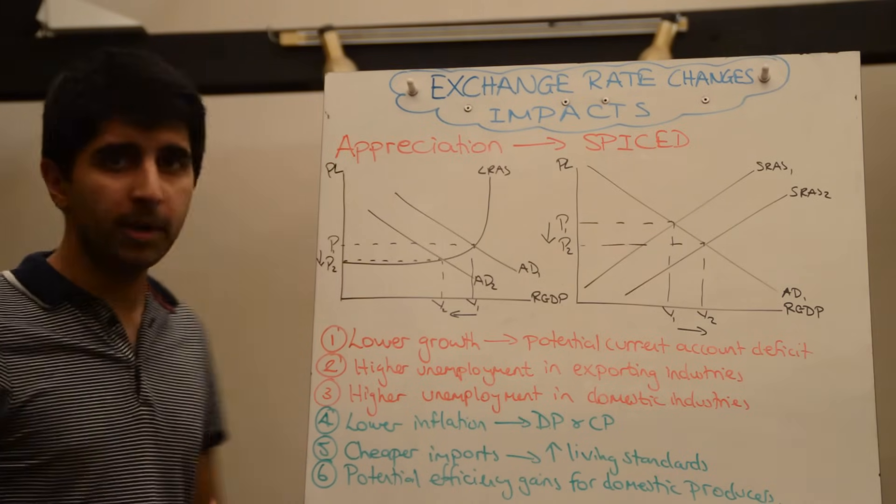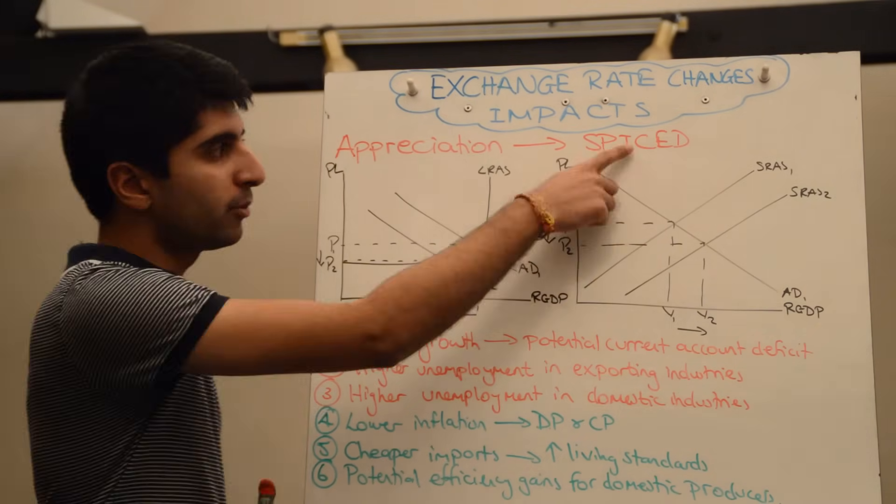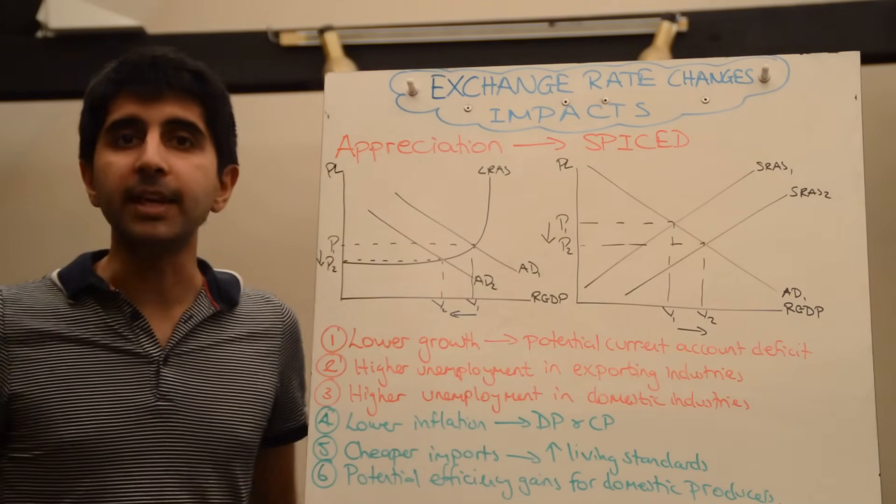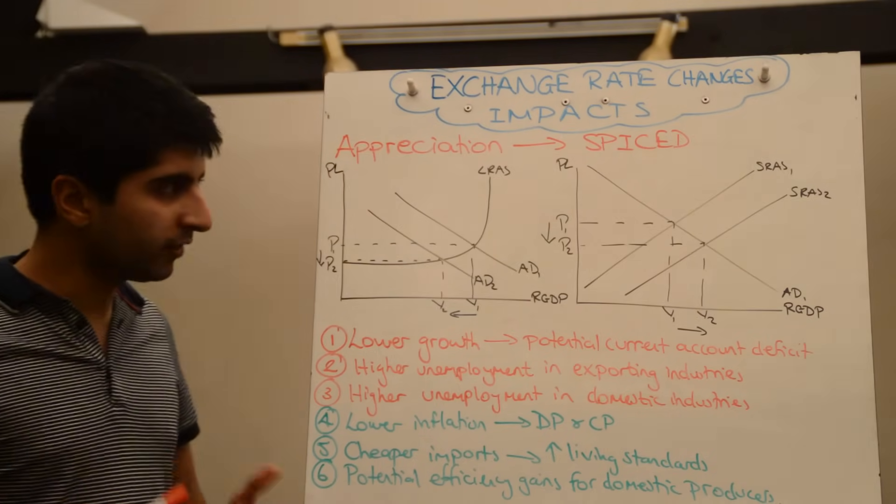But also higher unemployment in domestic industries. Domestic firms now have to compete with cheaper imports from abroad which makes it difficult for them. If they can't compete, they may need to sack workers as a result. So potential higher unemployment there as well.